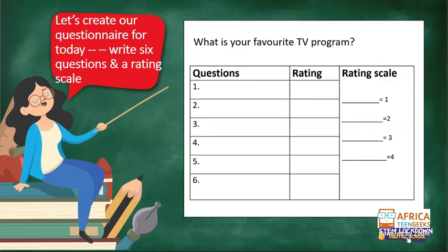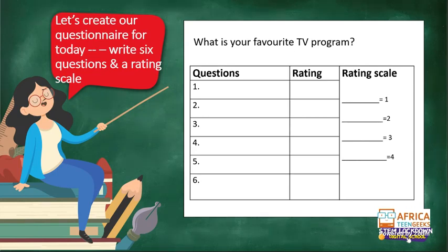Make a quick draft of this questionnaire — you don't need a ruler, just roughly. Write 'What is your favorite TV program?' and put three columns with space for four to six questions and a rating scale. As JD wisely said: if you practice it, that's how you remember it. If you just look at something, it goes out of your memory as soon as the lesson's finished.